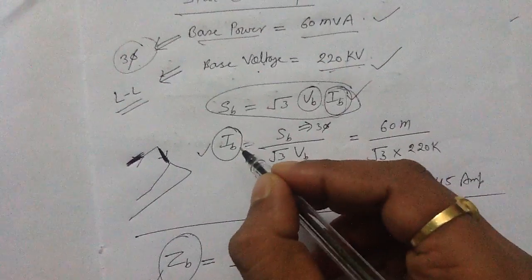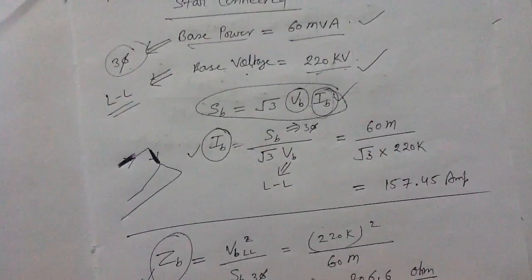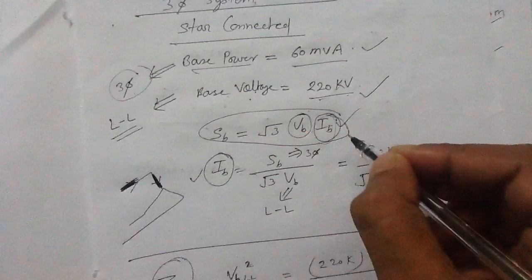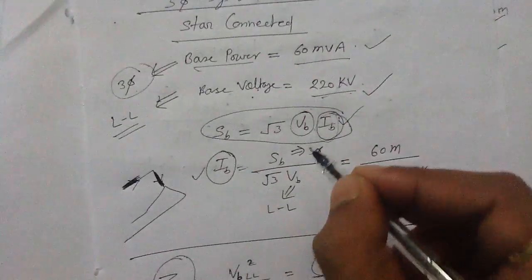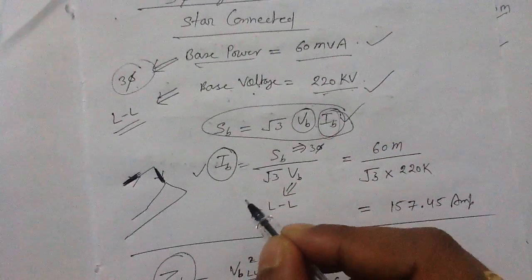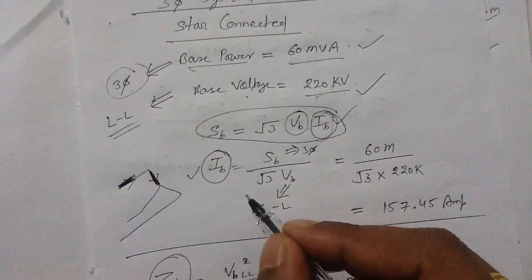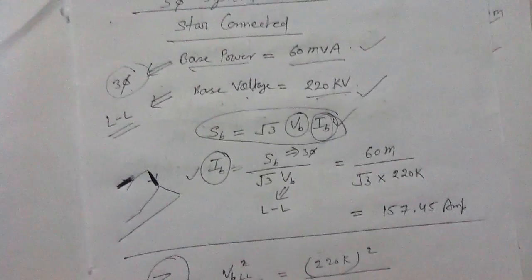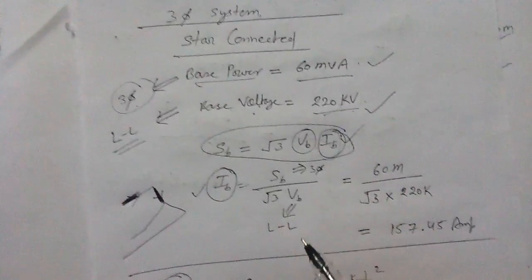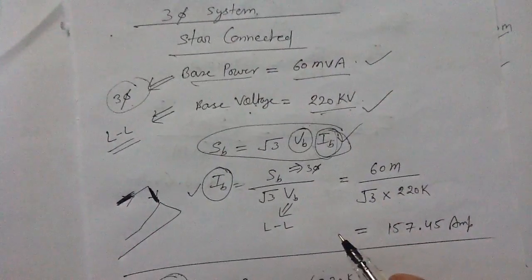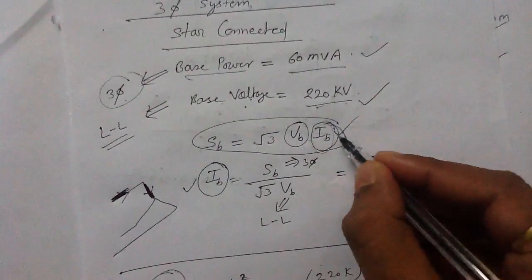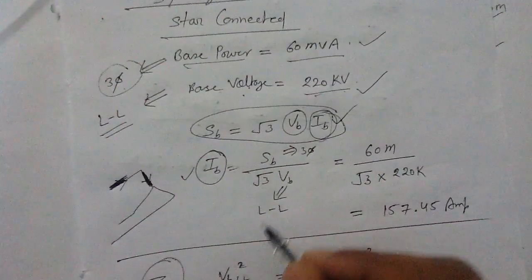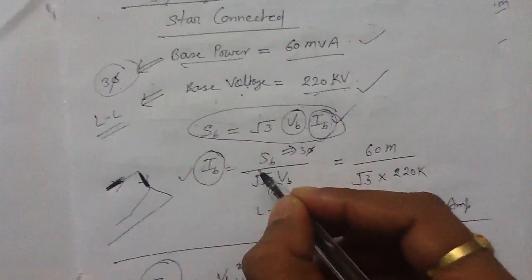By using this formula directly, we can find out the value of the base current. However, if you use this formula for the Delta-connected system to get the value of the base current, the answer will become wrong. So always remember: in the case of the star-connected system only, you can directly use this formula to find out the base current.